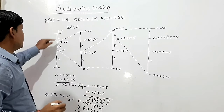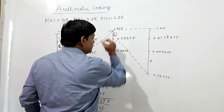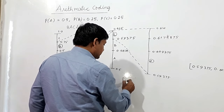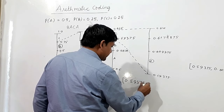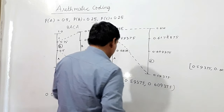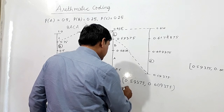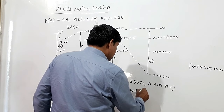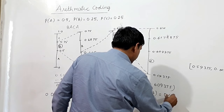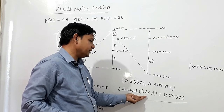We have encoded BACA by taking symbols B, A, C, and A. The codeword for BACA lies between 0.59375 and 0.609375, which is a closed interval. So the codeword for the sequence BACA is 0.59375.